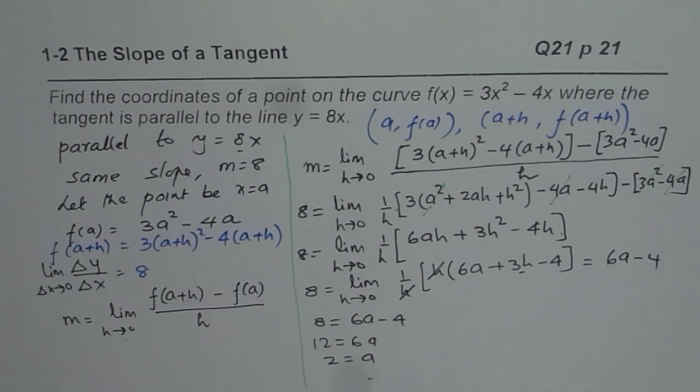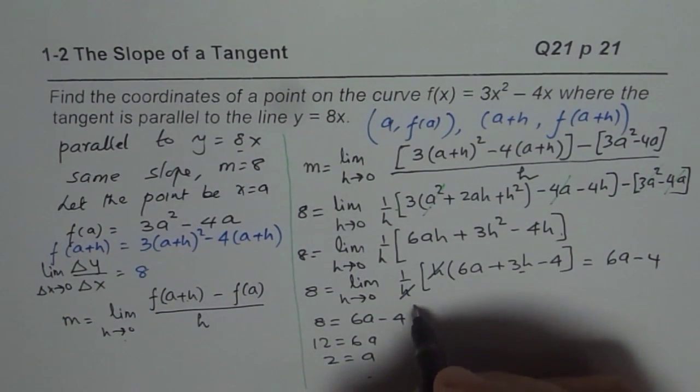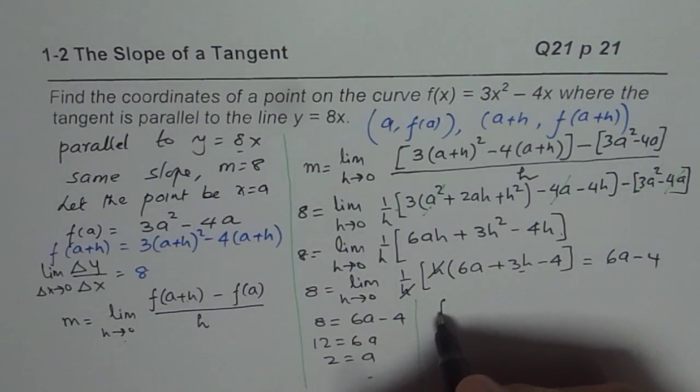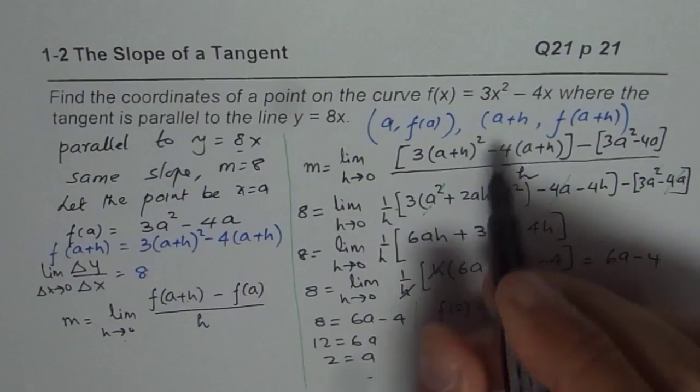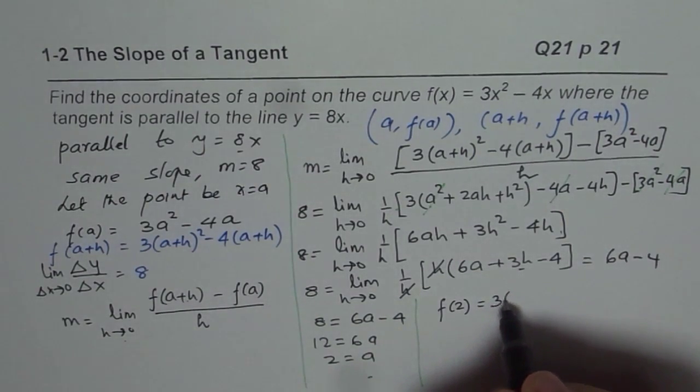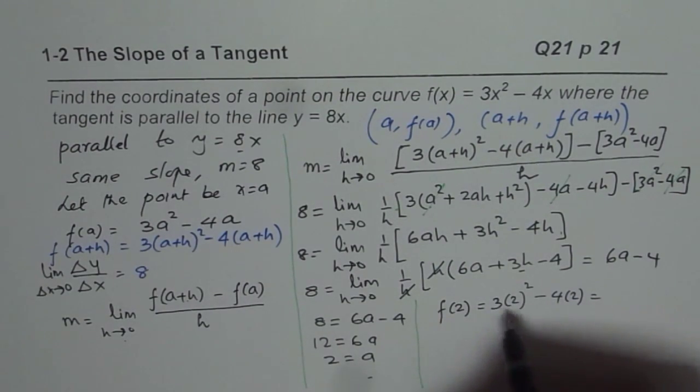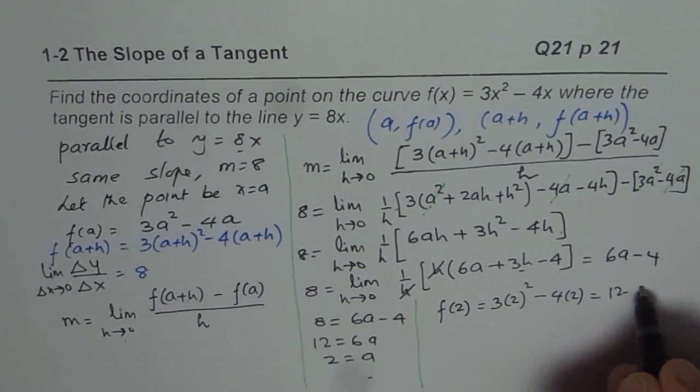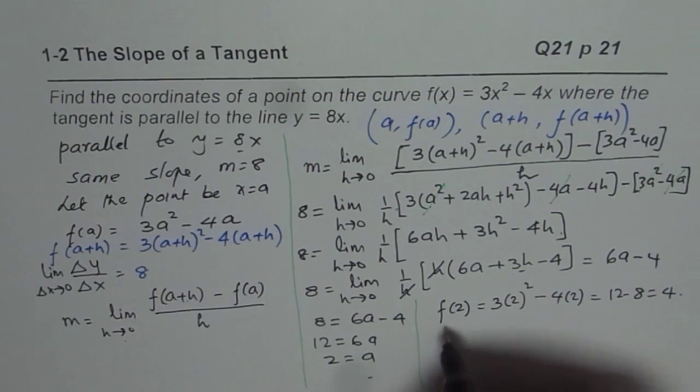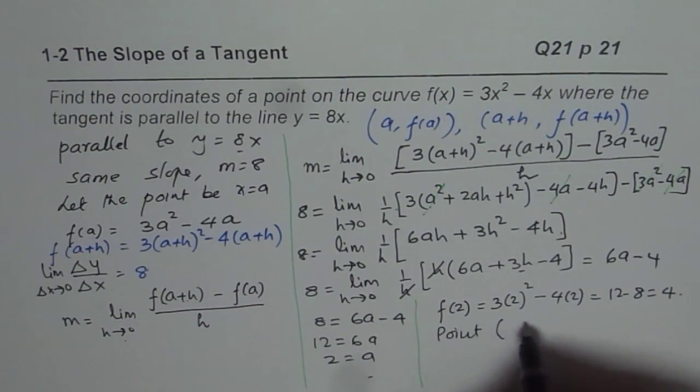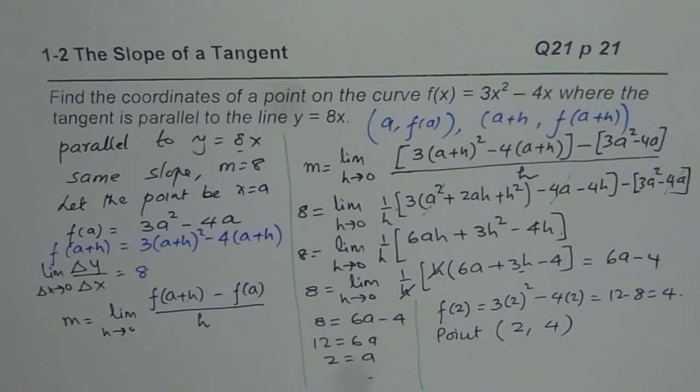We get a is 2. So, we can now find what is f(2). Plug in 2 here: f(2) = 3(2²) - 4(2), which is 3(4) - 8 = 12 - 8 = 4. So, the point on the graph is at (2, 4). So, a value is 2 for us.